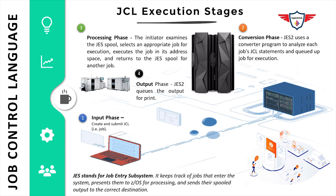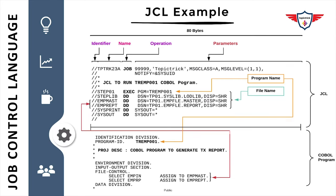Now let's move to the JCL example section, focusing on how to execute a COBOL program with the help of JCL. Looking at the top section of the sample JCL: the first two columns are the identifier, then you have the name starting from position three for 8 bytes, then the operation — JOB, EXEC, and DD statements. In the parameter section, you have different positional and keyword parameters such as message class, message level, and notify.